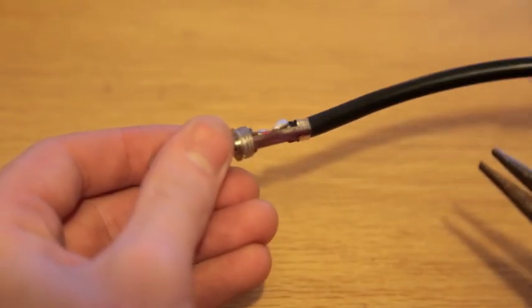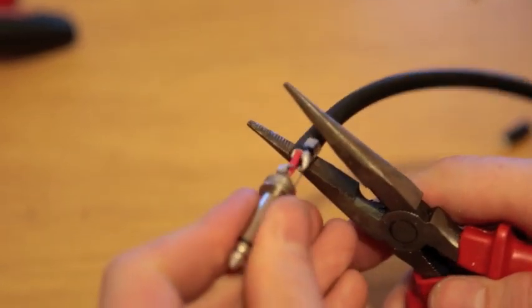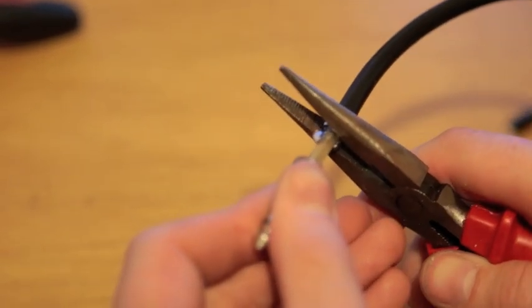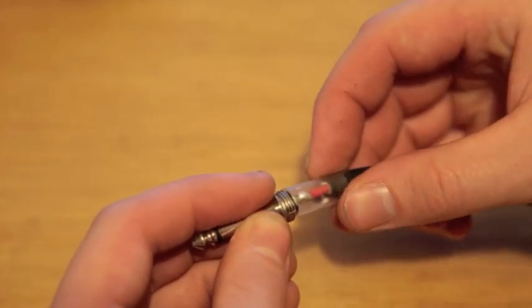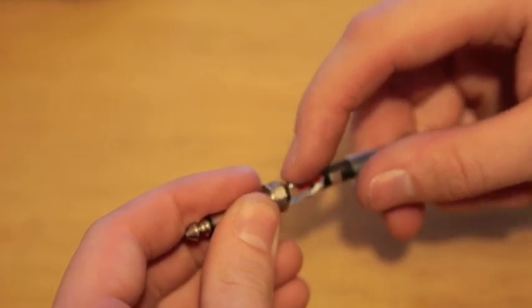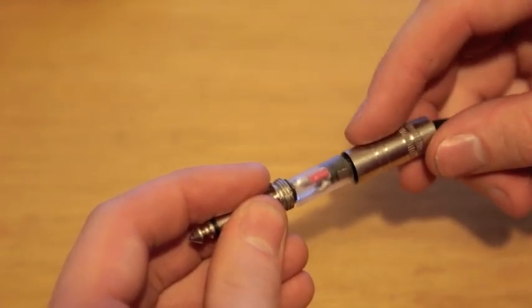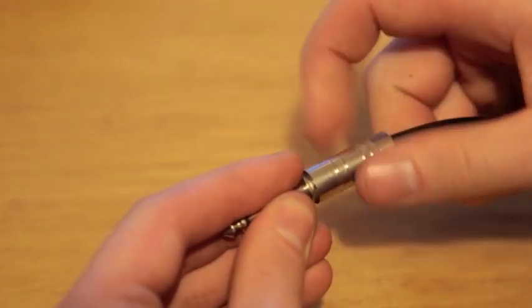Once we've finished our soldering we can tighten up this little clamp by just squeezing it with the pliers. It tightens it a little bit on the cable to help strain relief. Then we can slide on the plastic sheath that prevents the center pin from touching the outside cover whenever it's bent or twisted, and we can tighten it up.